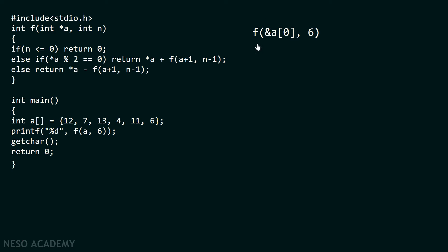This is our caller. Let's evaluate function F now. Within this function, we will first check the condition: is n less than zero? We know that n is not less than zero because n contains value six. Therefore, this statement will not get evaluated. We will land at the next condition: is star A mod two equal to zero? This means: is the content stored in the location pointed by pointer A an even number? If we get remainder zero after dividing by two, we evaluate the even branch; otherwise, we evaluate the odd branch.